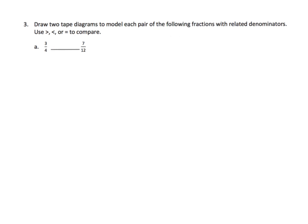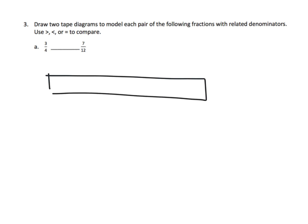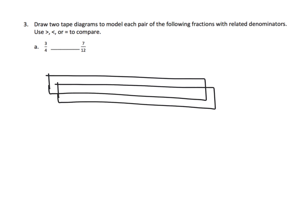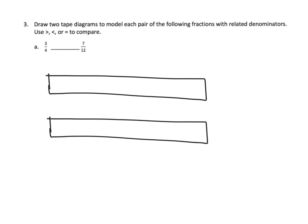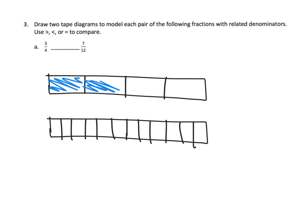Here we're going to specifically draw two tape diagrams to model, making sure that the whole in both cases is exactly the same. We have three-fourths and seven-twelfths. We begin by cutting the first bar into fourths, and the second into twelfths — which is easy by starting with fourths and cutting each piece into three. Shading three-fourths and then seven-twelfths, we can see that three-fourths is larger than seven-twelfths.